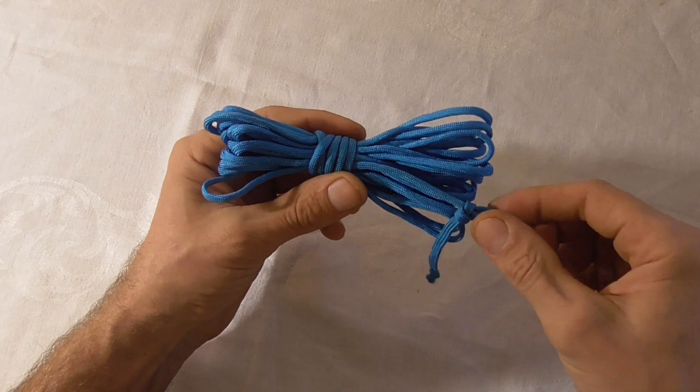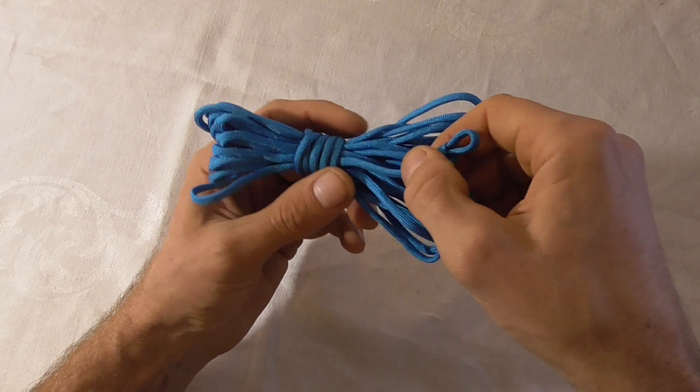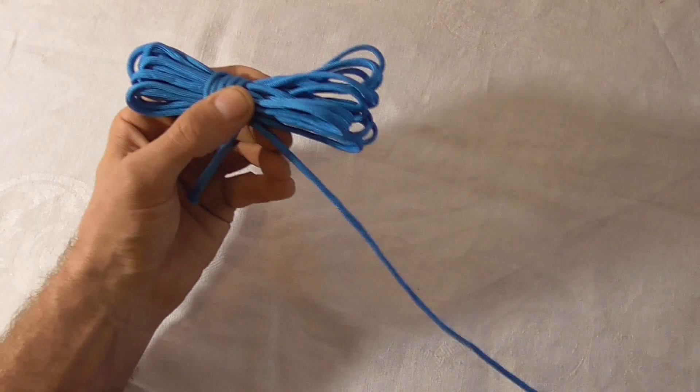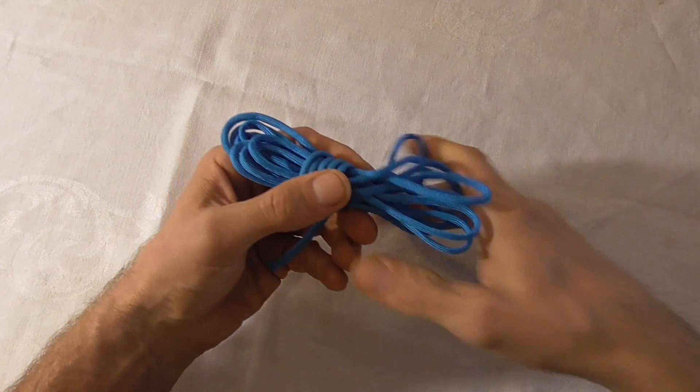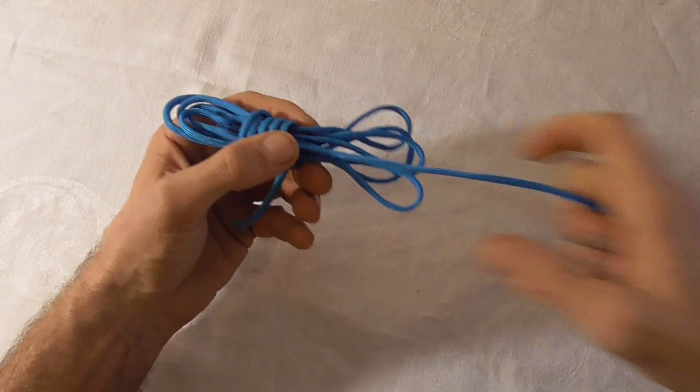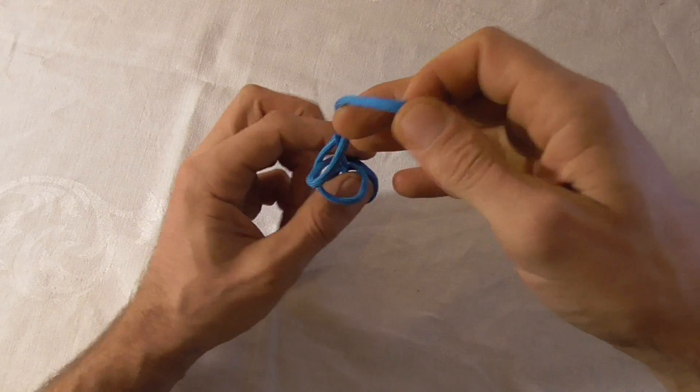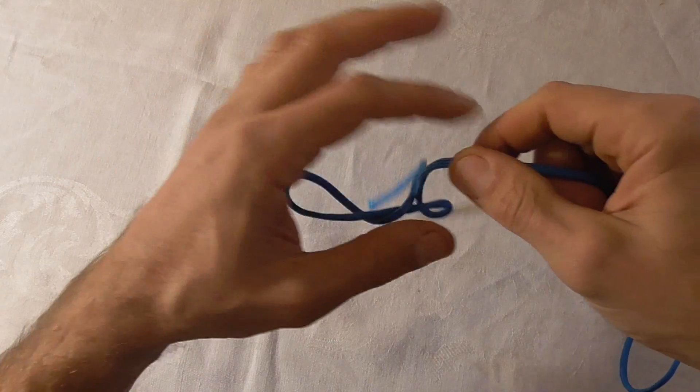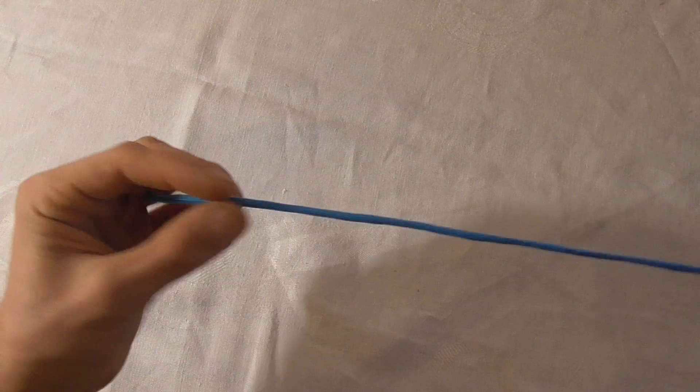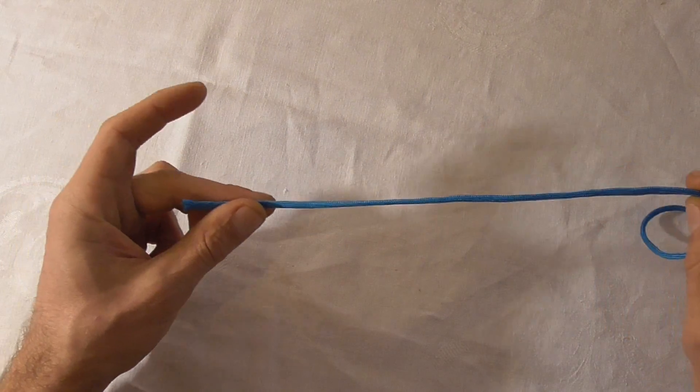And then to undo this whole thing, all you need to do is locate your loop and pull on it. And then the whole bundle should come out tangle free. Just got to watch the very end, sometimes it forms an overhand knot, but that's easy to undo. And this whole thing comes out no tangles, and that's how I like to wrap my paracord.